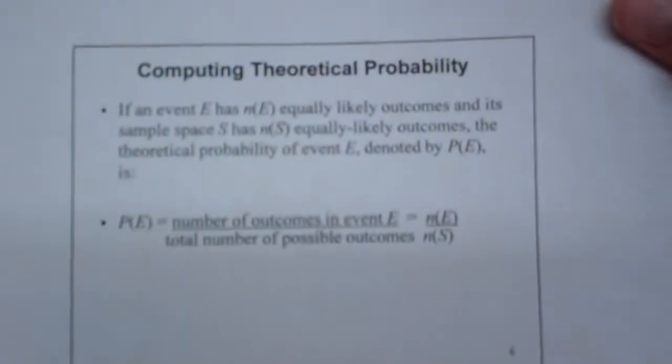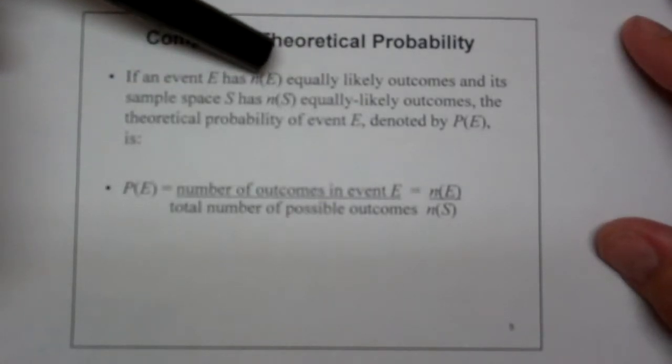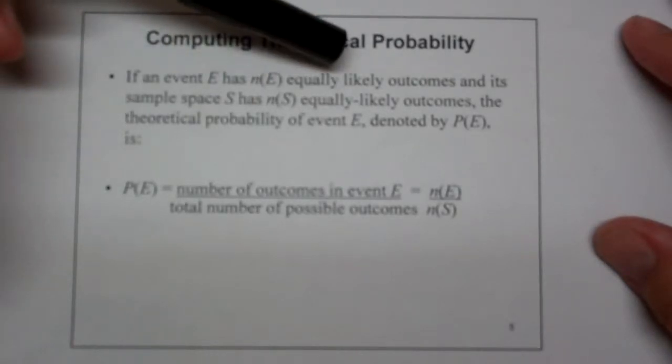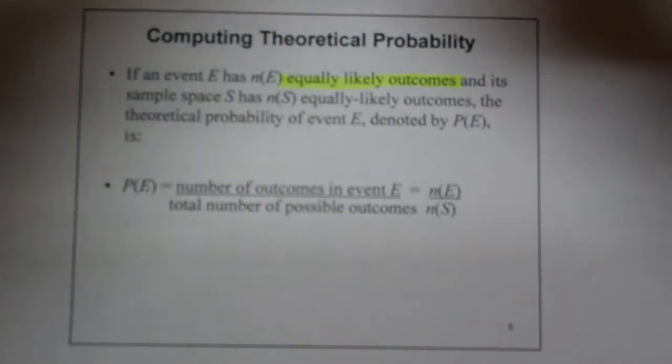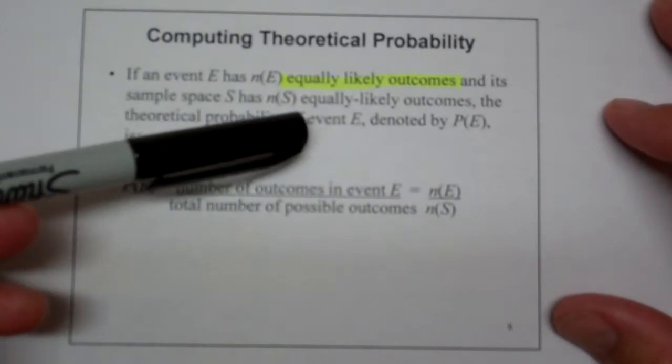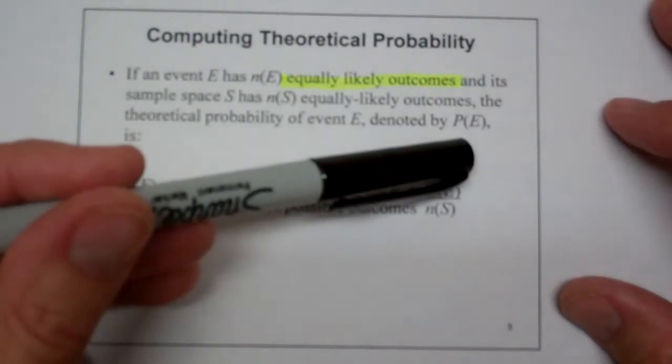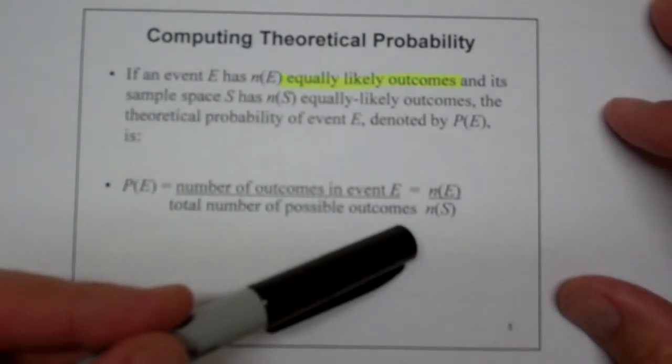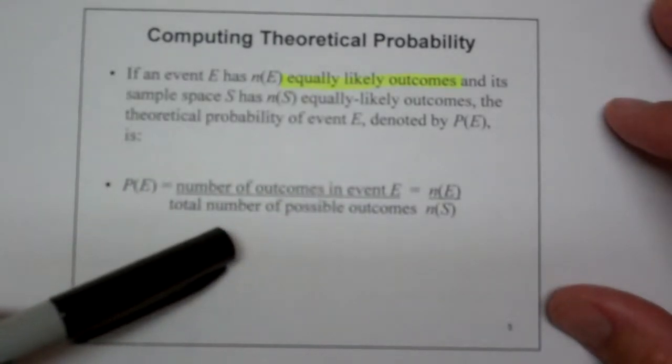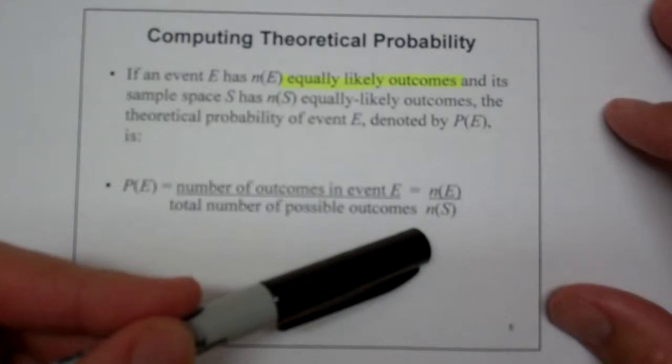So then how do we compute a theoretical probability? What am I going to do? Well, if an event E, and this is our cardinal number, the number of events that would qualify are equally likely outcomes, and this is what makes it theoretically possible, that I know that they are equally likely outcomes. It has a sample space S, and again, this is the cardinal number of the sample space, equally likely outcomes. The theoretical probability of an event E is denoted by the probability of E. So the number of possible outcomes in the event, the total number of possible outcomes, and now you can start to see where the permutations and combinations are going to come in handy when we start calculating the total number of possible outcomes.